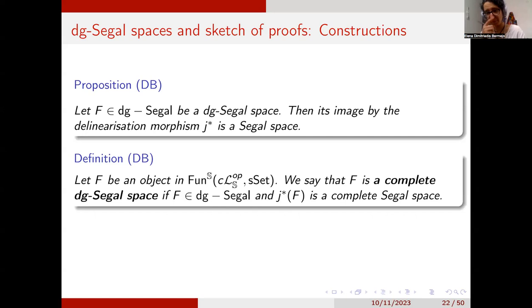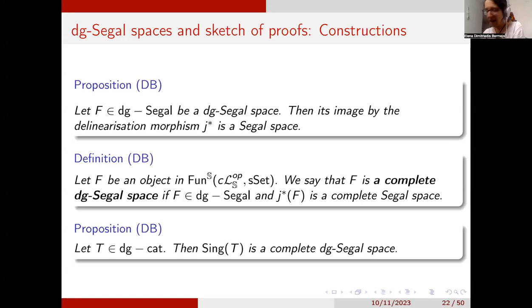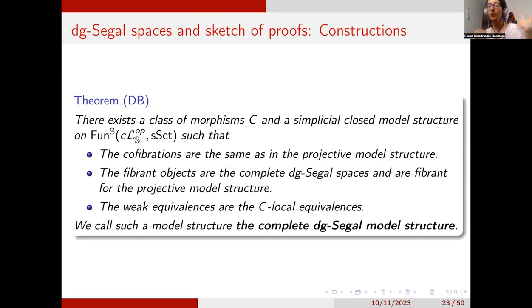There is a way of defining completeness without going through the delinearization process, but I thought this was an easier way to understand it. And we seem to be in the right direction: every element in the image of Sing is a complete DG Segal space. Again, we can find a model structure for this — it is another left Bousfield localization in which the fibrant objects are the complete DG Segal spaces, and we call it the complete DG Segal model structure.